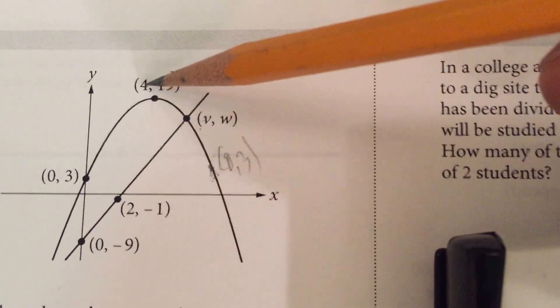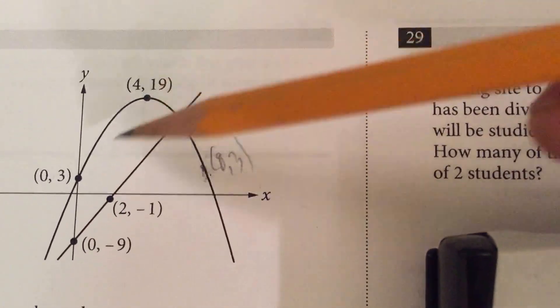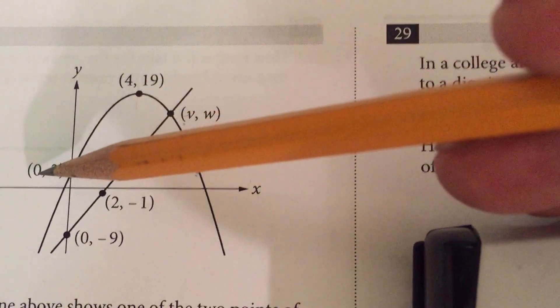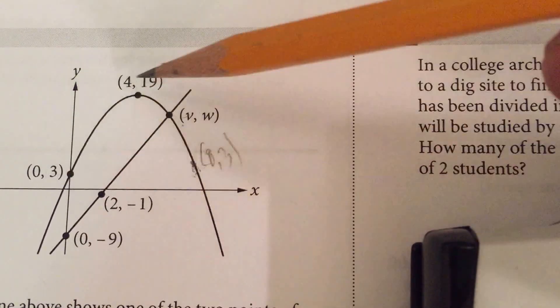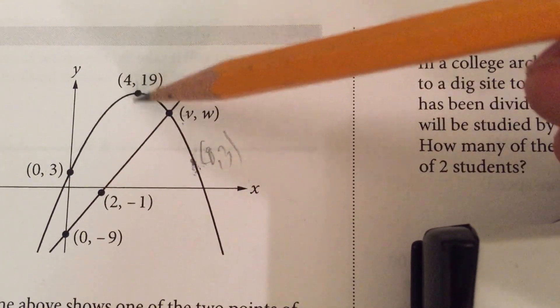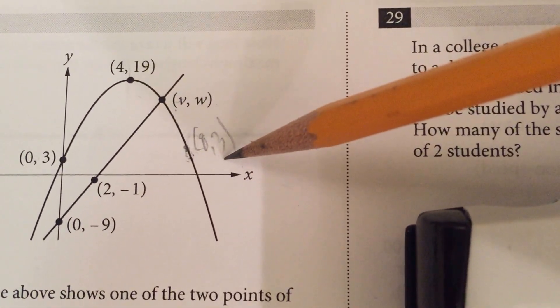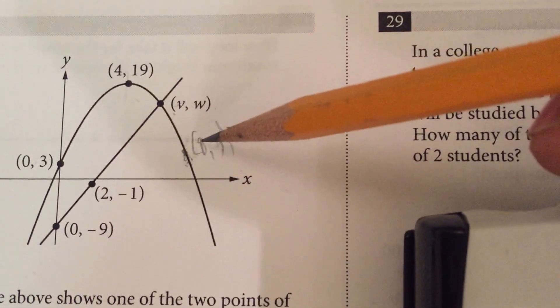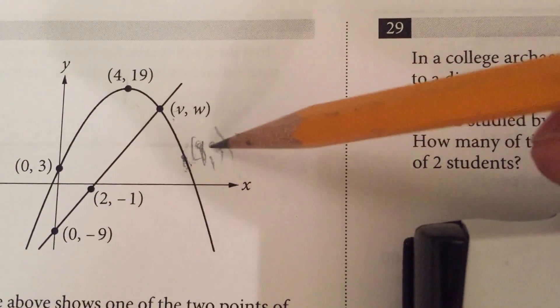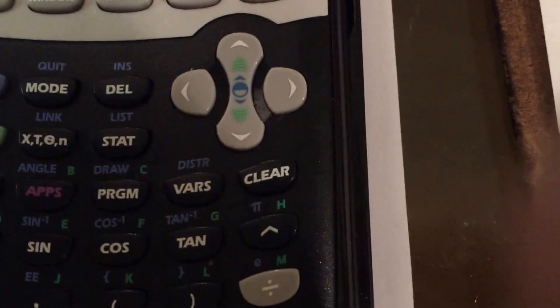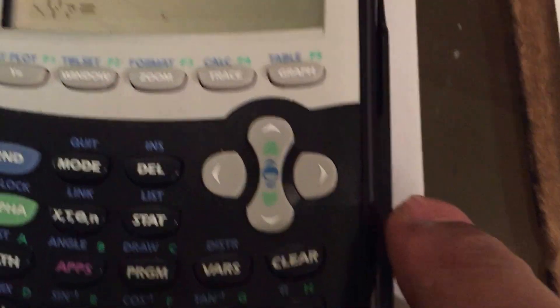And again, the way we know that is the X value for the vertex is halfway between this and this. So if this from here, 0 to here is 4, we know that if we add 4 more, we get the X coordinate of the new value. So now we've got three points. So now we can generate the quadratic equation for our quadratic piece.